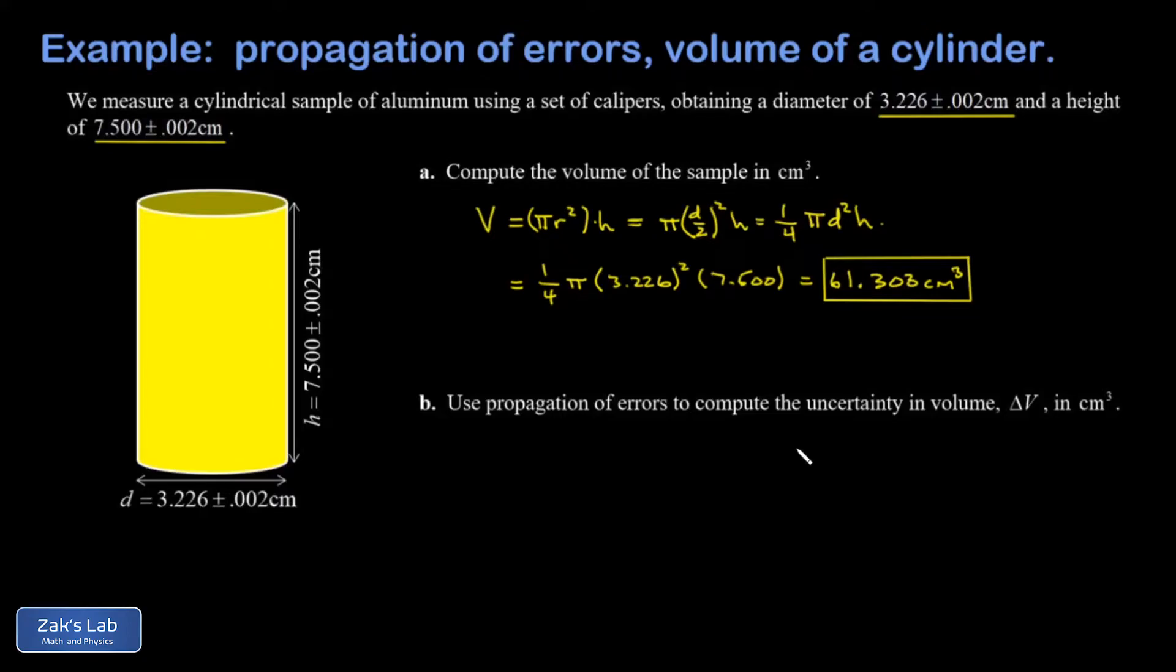Then round off the original volume measurement to that same place value. The volume is a product of a power of one measured quantity, that's the diameter, and then another measured quantity, that's the height.